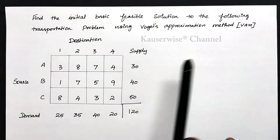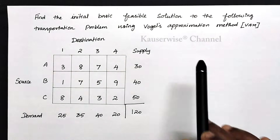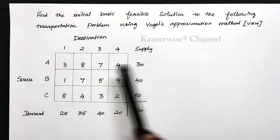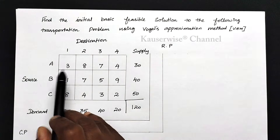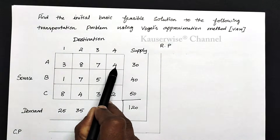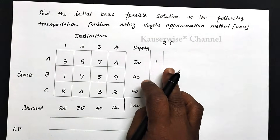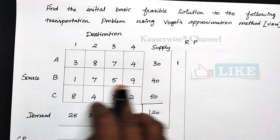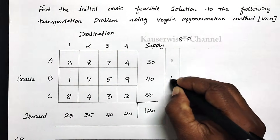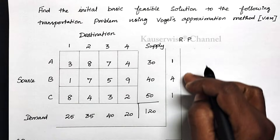To solve the problem under VAM method, we need to follow a few important steps. The first step is to find row penalty and column penalty by finding the difference between the smallest and second smallest element in each row and column. In the first row, least value is 3, next least is 4, difference is 1. Second row: least is 1, next least is 5, difference is 4. Third row: least is 2, next least is 3, difference is 1.